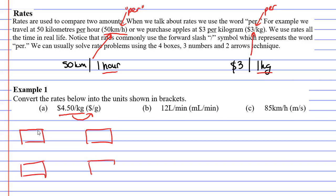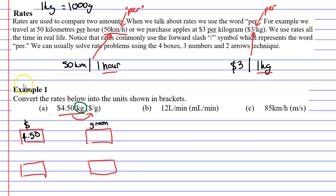We'll start by drawing four boxes. I'm going to write $4.50 on the left — so this is my dollars — and one kilogram on the right. As I mentioned before, the units on the right side of the forward slash have an amount of one, so that is one kilogram. Now they want us to convert this into dollars per gram, which means my amount on the right needs to be in grams. I know that one kilogram is the same as a thousand grams, so I'm going to replace the one kilogram with a thousand grams.